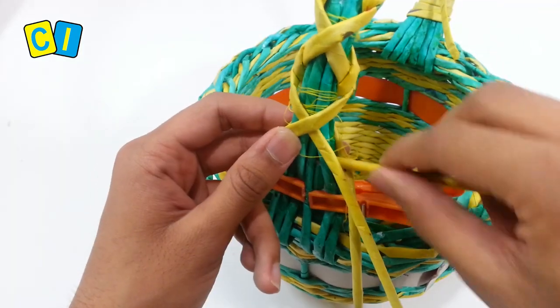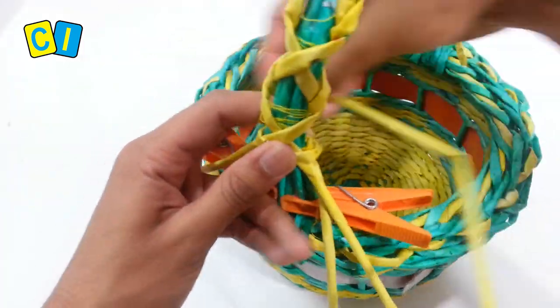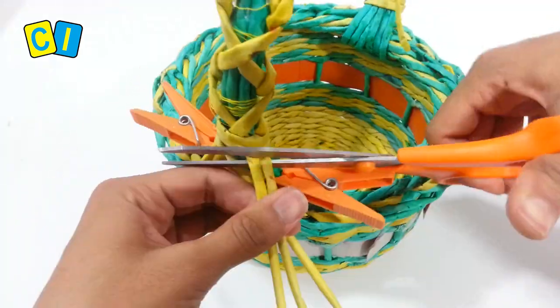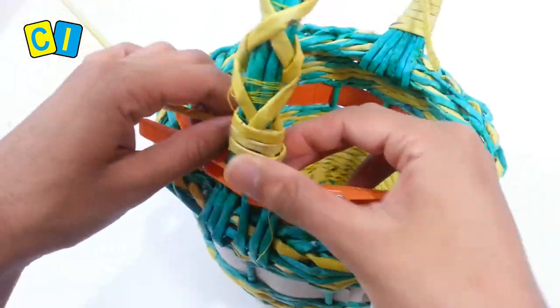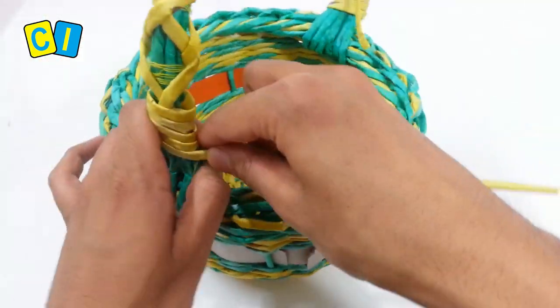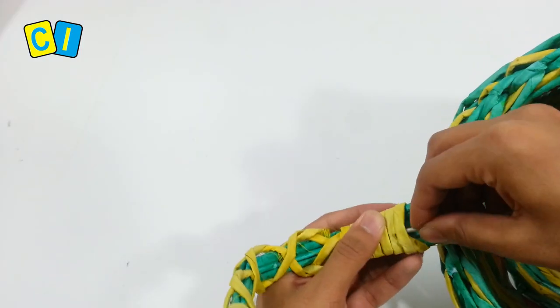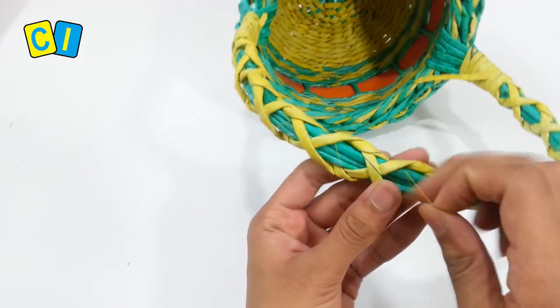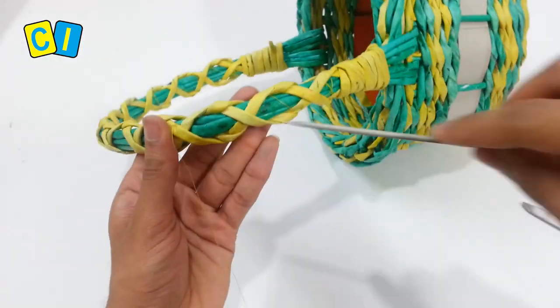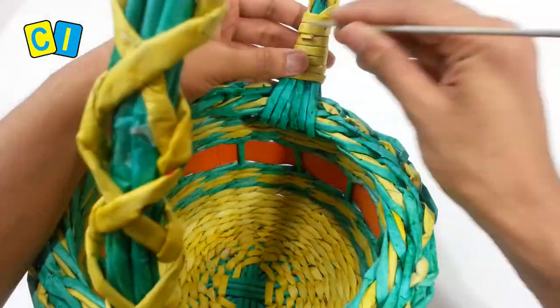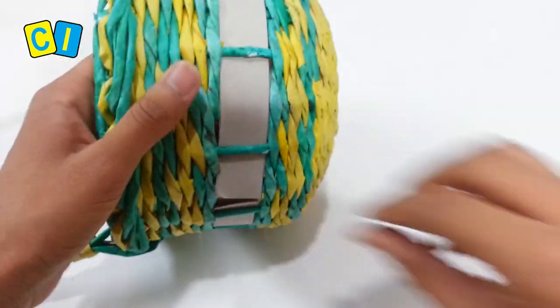Take a yellow tube, insert here and wrap around the tube. Make space and insert here. Carefully remove the thread, and also remove the cardboard.